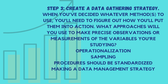Step 3: Create a data gathering strategy. When you've decided which method or methods to use, you'll need to figure out how you'll put them into action. What approaches will you use to make precise observations or measurements of the variables you're studying? If you're doing a survey or an interview, for example, decide on the format of the questions. If you're conducting an experiment, decide on the experimental design.